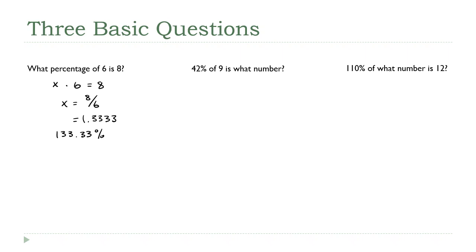Now look at the next one: 42% of 9 is what? The first thing I'm going to do is bring this 42% down, but remember, we never want to use a percentage in a calculation. So instead of 42%, I'm going to use the decimal equivalent: 0.42 times 9 is, that's the equals, what number?